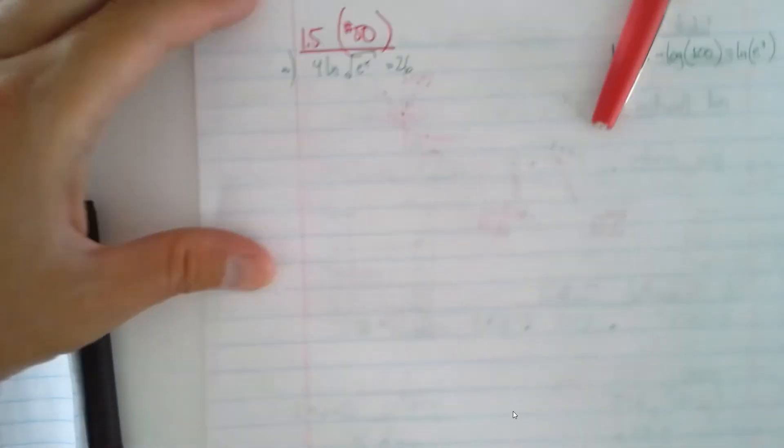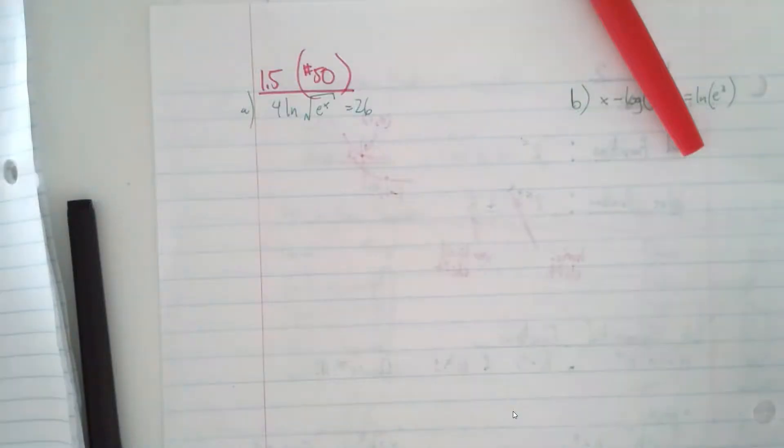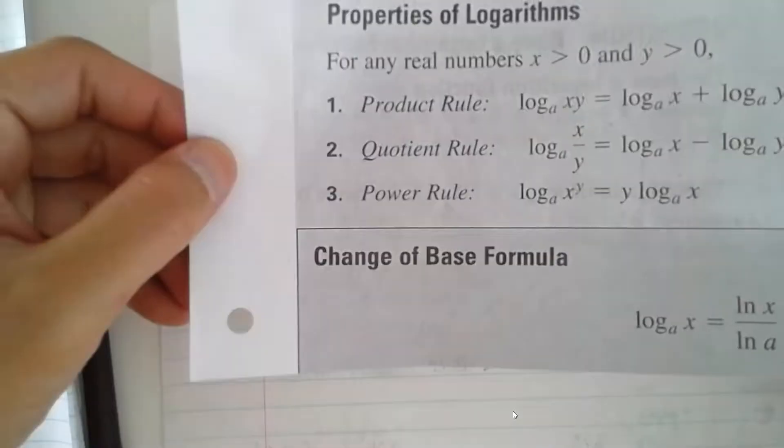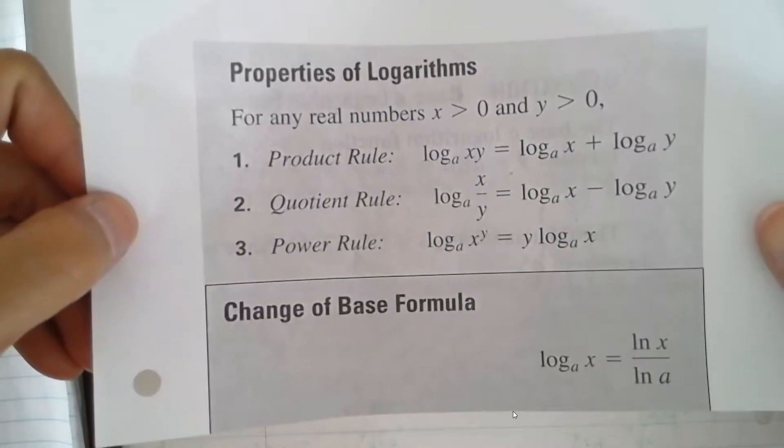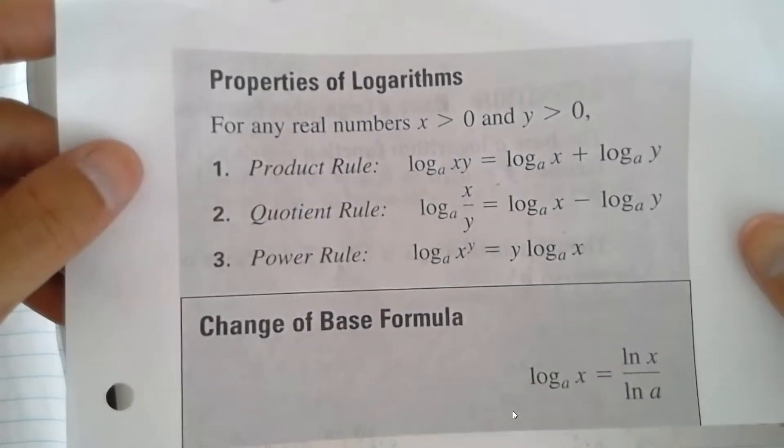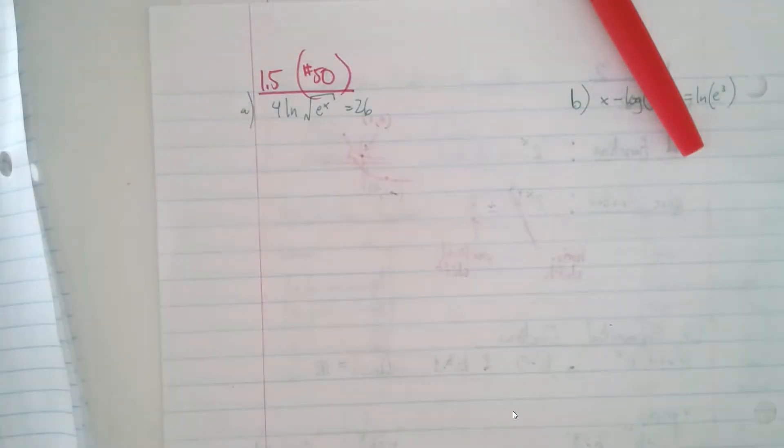Let's dissect each one using our handout that I have in class: the product rule, quotient rule, power rule, and change of base formula. You can pause and write those down, or you can just look at your handout. Let's go ahead and attack this one by one.